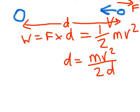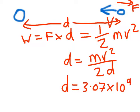So if we plug in numbers, we end up with d equals 3.07 by 10 to the 9 meters, which is rather large.